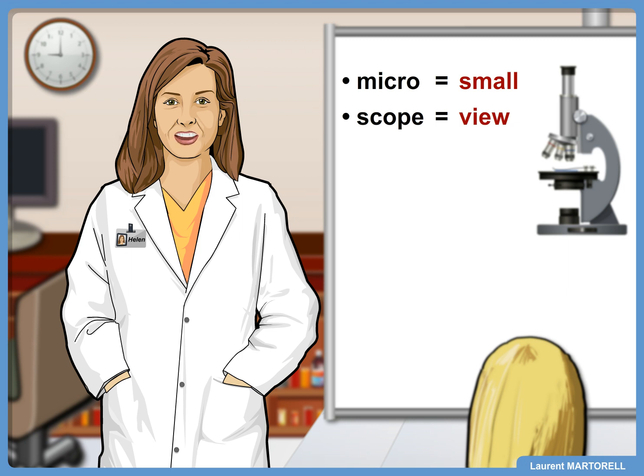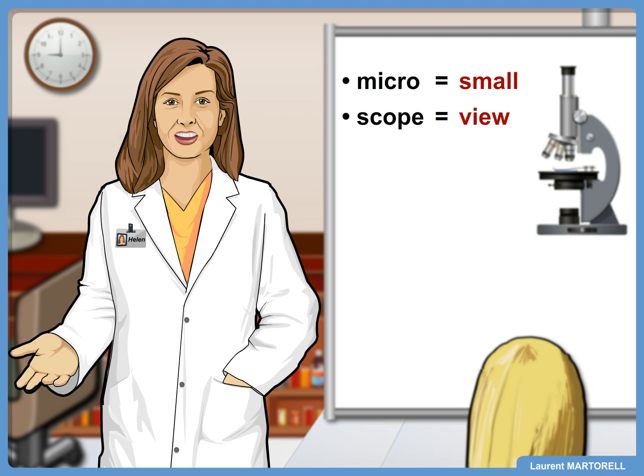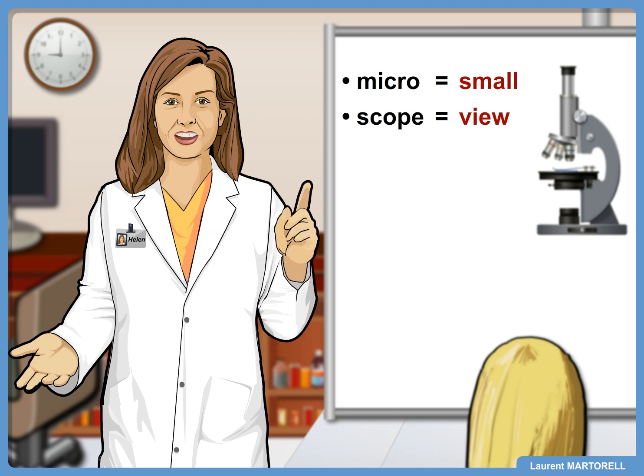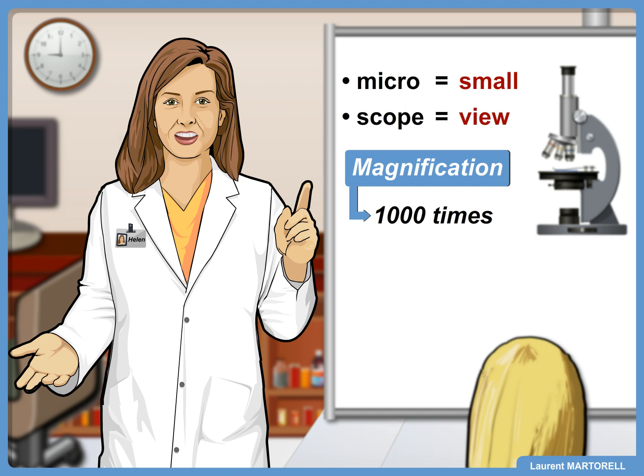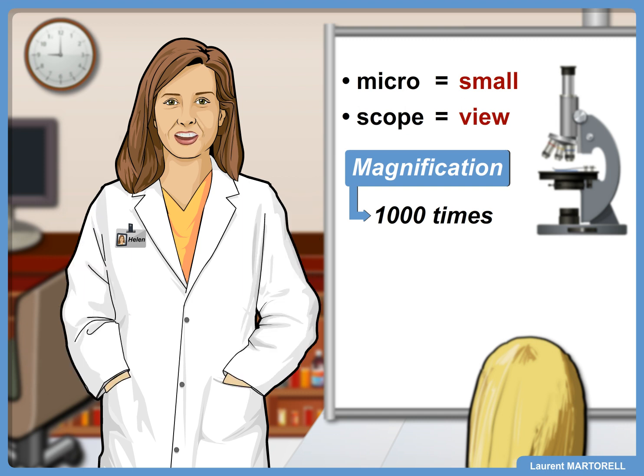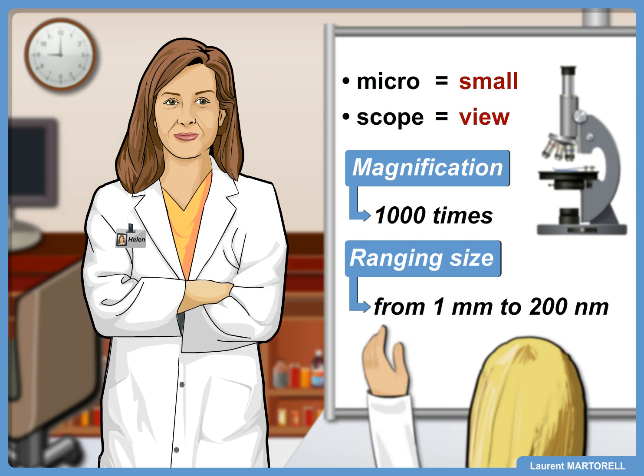You should also know that a standard compound light microscope, the one you have on your lab bench, can magnify objects about a thousand times. How small do the objects have to be so we can study them? A light microscope is a useful tool for studying objects ranging in size from one millimeter to about 200 nanometers.